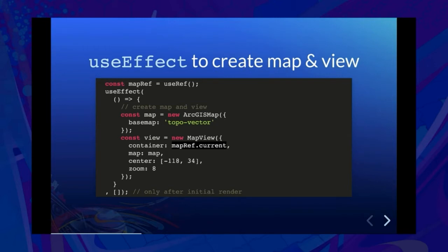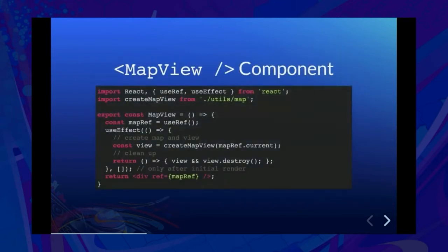That's all we need to do to create a map and view. For when we want this to happen — the second argument — we want it to happen after the div is rendered, specifically the first time this component renders and only the first time. To do that, we pass in an empty array. Whenever you're using an effect to create a map or view, you probably want to pass in an empty array as the second argument. Here's the entire code for this map view component — I've moved the code that creates the map and view out to a util function, since there's no React in that code.